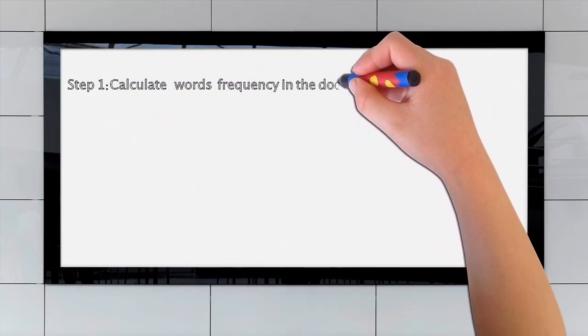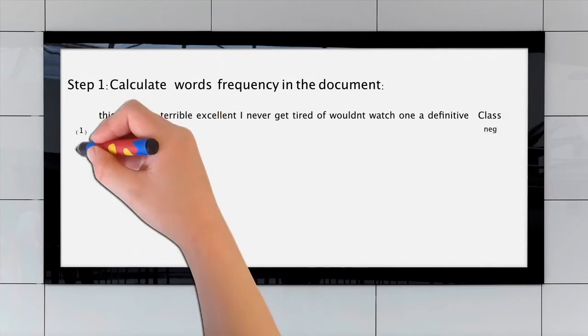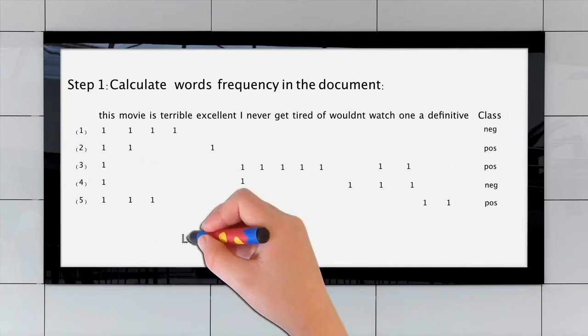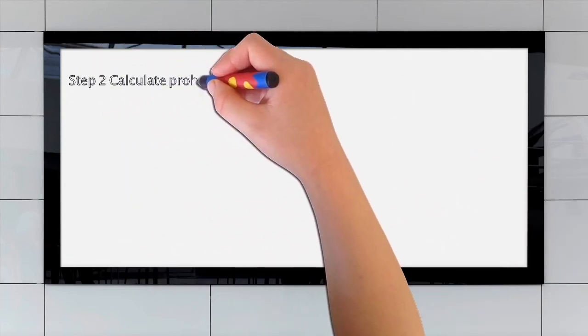Then, let's go to step one, calculate words frequency in the document. In the following process, I will count each word frequency. After doing this, let's look at the probability for progress.